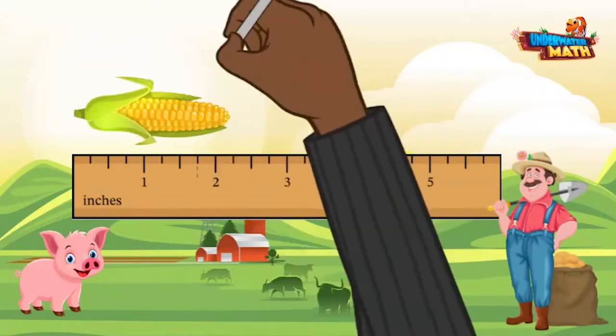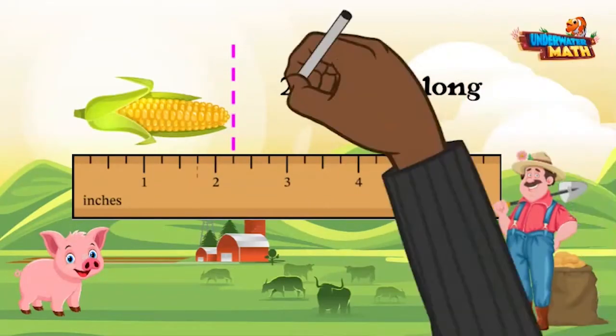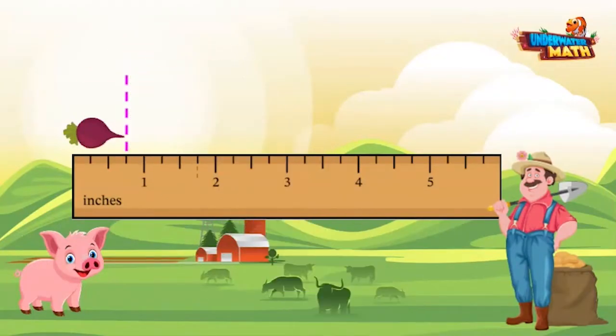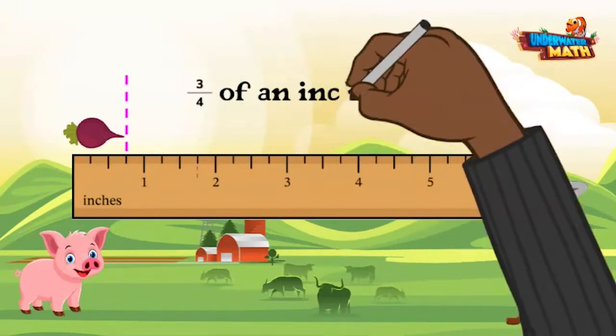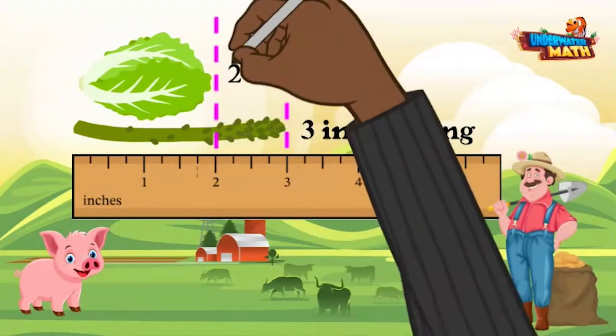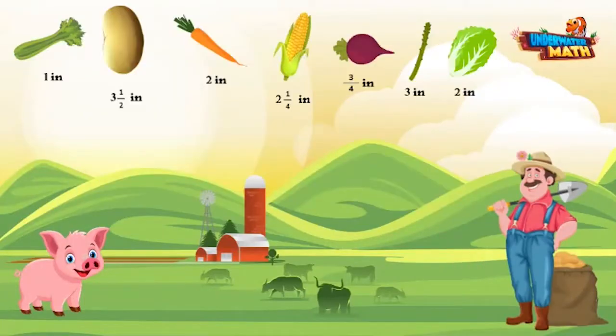This corn is one fourth inch between two and three inches, so it's two and one fourth inches. This beet is at the three fourths mark between zero and one, so it is three fourths of an inch. This asparagus is three inches and the head of lettuce is two inches.